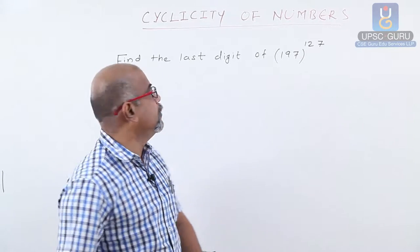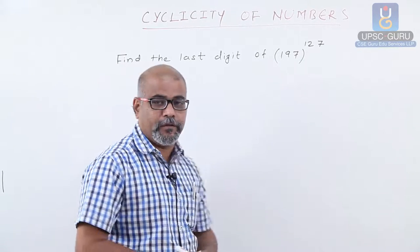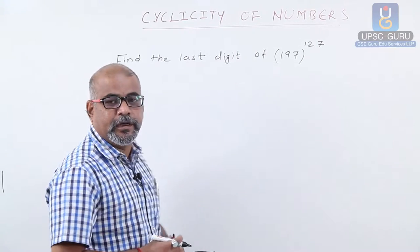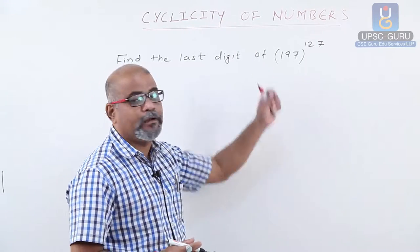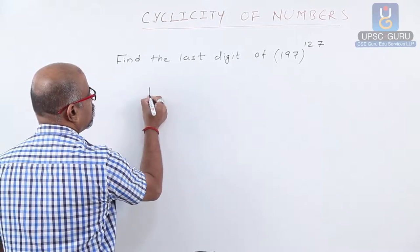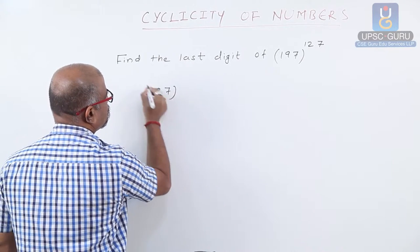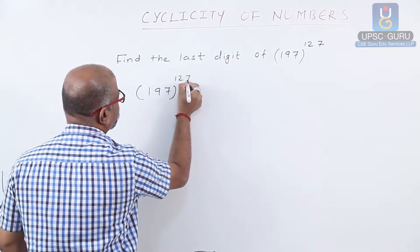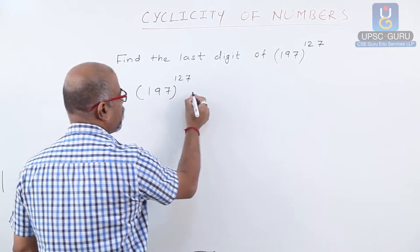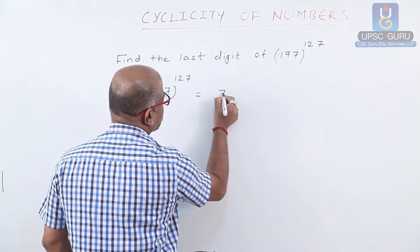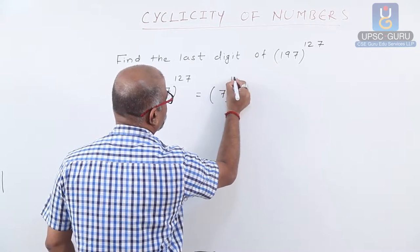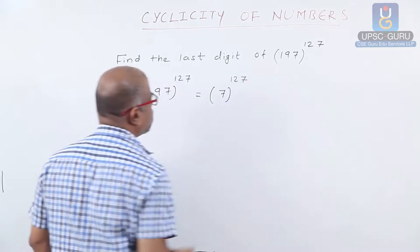Application of cyclicity of numbers. First, find the last digit of 197 to the power 127. The last digit of this number is nothing but the last digit of 7 to the power 127.